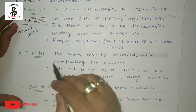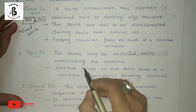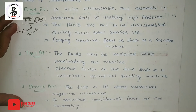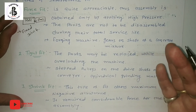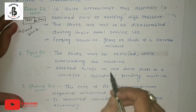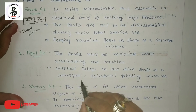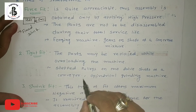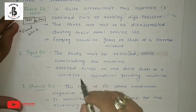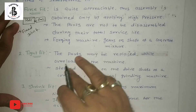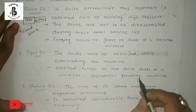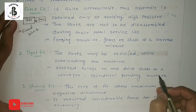The second type is tight fit. In this case, parts may be replaced while overhauling the machine. It has flexibility — under overloading conditions the component can be replaced with another. An example is a stepped pulley onto the drive shaft of a conveyor. According to requirements, different pulleys can be assembled and disassembled. Another example is cylindrical grinding machines, which can also be considered a tight fit operation.